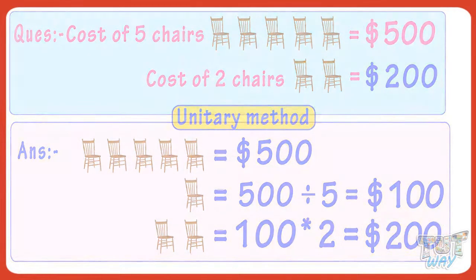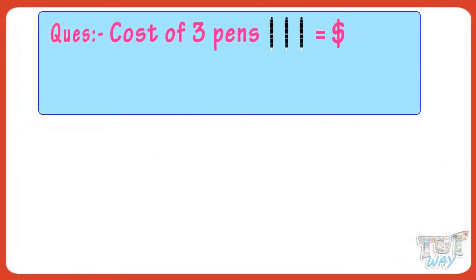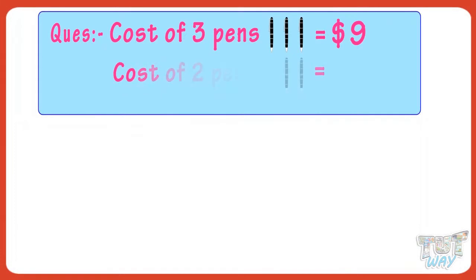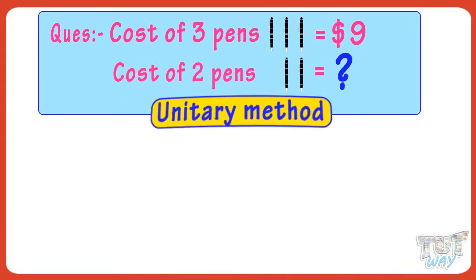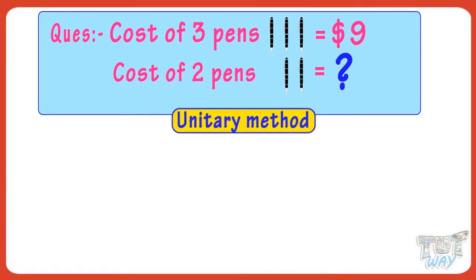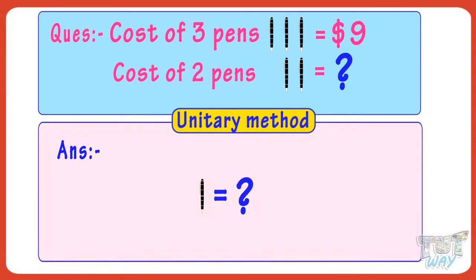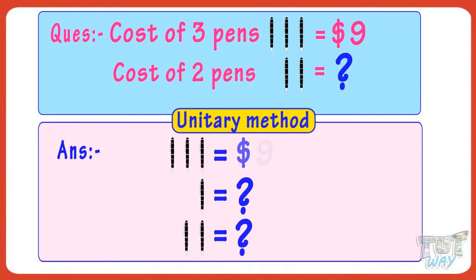Now let's take another example. The cost of three pens is $9. What is the cost of two pens? Let's find it out with the help of the unitary method — that is, first find the cost of one pen and then find the cost of two pens. If the cost of three pens is $9, then the cost of one pen is $9 divided by 3.